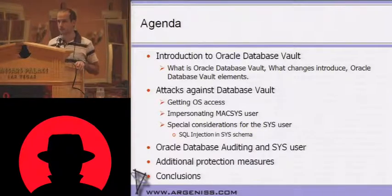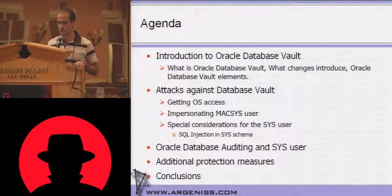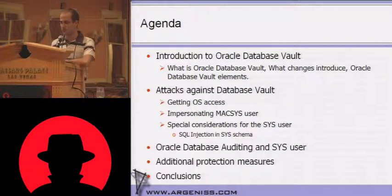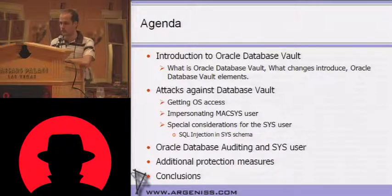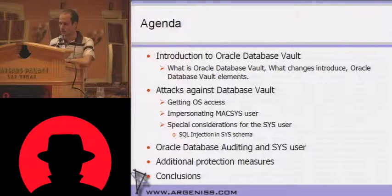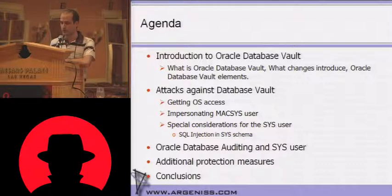This is an outline of this presentation. First, we will see an introduction to Oracle Database Vault. This is quite a new topic for this kind of conferences, so I will be doing an introduction to see what Oracle Database Vault is, what changes it introduces, and what are the elements of Database Vault. Then we will go to the attacks, which is the most important part of this presentation, where I will show different attacks and some ways to protect from them. First, we will see the attacks that will give us operating system access, and how that OS access will allow us to disable or bypass Database Vault.